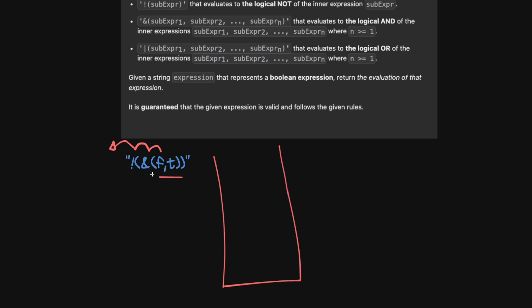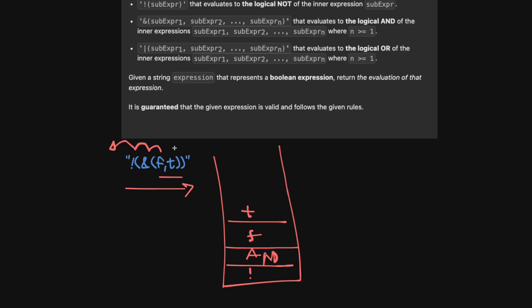What we want to do is essentially just parse the string from left to right. Whenever we see an expression, we add it to our stack. We put 'not' on it, then we see an opening parenthesis — we ignore those. Then we see the 'and' operator, we push that. We see another open parenthesis, then we see F, we put that onto the stack. We ignore commas. Then we see T. When we see a closing parenthesis, we start popping from our stack.